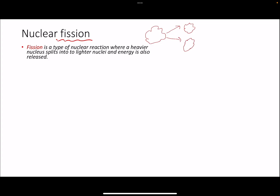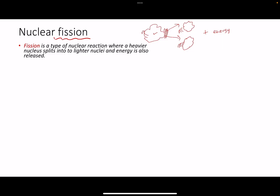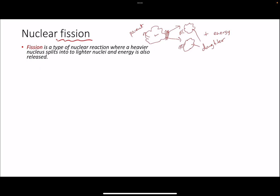When the splitting takes place, a lot of energy is also released, and you can witness this energy in the form of the speed of these particles — they will be moving at quite high speeds. The original parent nucleus will recoil as well. This one is called the parent nucleus and these two are called the daughter nuclei.